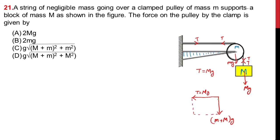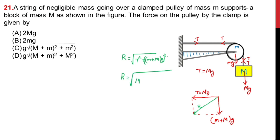So the resultant of these two forces — tension and (m + M)g — will be acting diagonally. The resultant force R is equal to the square root of T² plus (m + M)g, the whole squared. Tension is equal to Mg itself, so R = square root of (Mg)² + (m + M)g whole squared. Taking g² as common outside: R = g times square root of M² plus (m + M) whole squared.